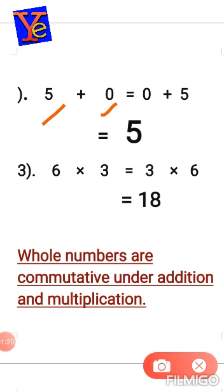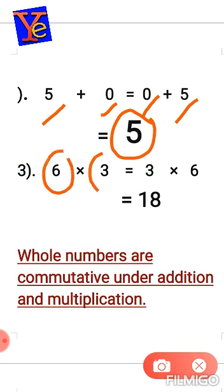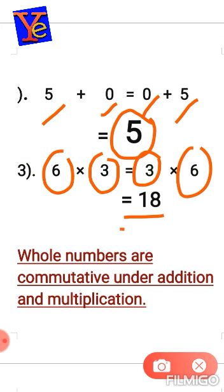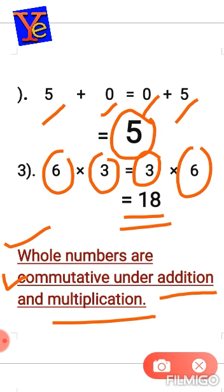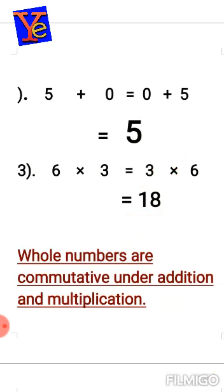Let's take another example: five plus zero. Switching the positions gives zero plus five, and we get the same answer again. If I multiply two numbers — six multiplied by three gives eighteen — and if I switch to three multiplied by six, I again get eighteen. This means whole numbers are commutative under addition as well as multiplication.